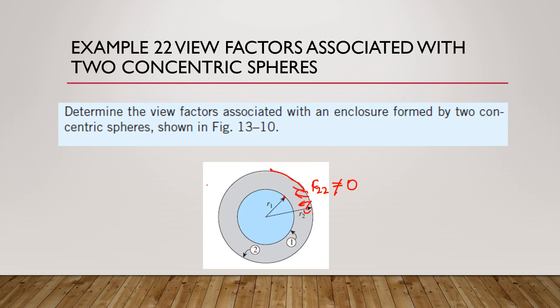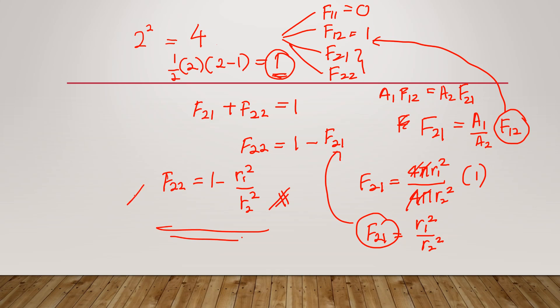Since no specific radius values are given, we leave the answer as these expressions. That is how we apply the summation rule. For surface 2, all front indices in the view factors must be 2. If you have three surfaces, you would have F2-to-1 plus F2-to-2 plus F2-to-3 equals 1. That's all for the summation rule.